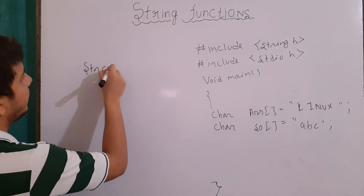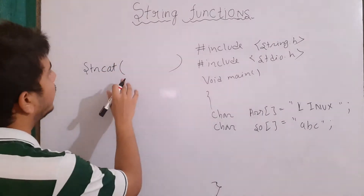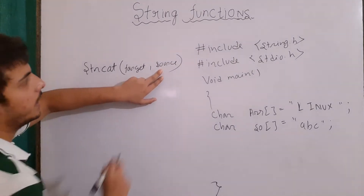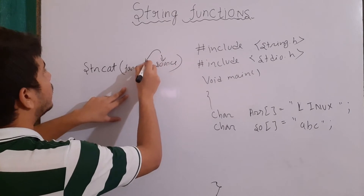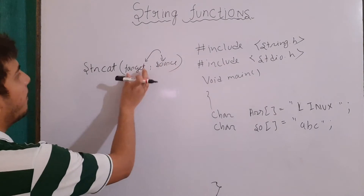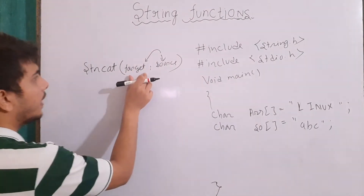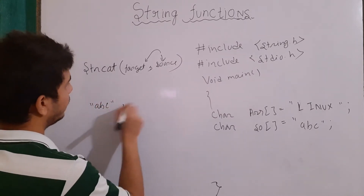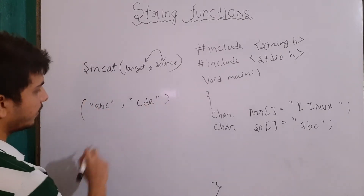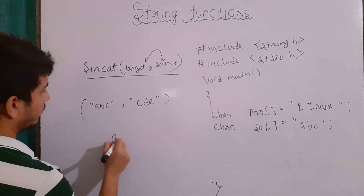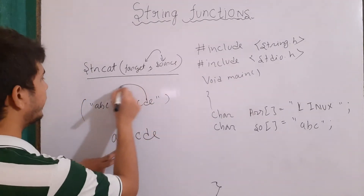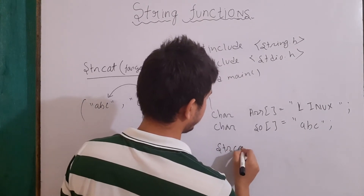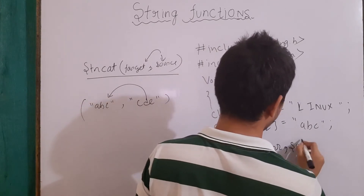Next we have strcat, which is string concatenation. It also takes two inputs — target and source. Whatever string is present in source will be appended to the target array — appended, not overwritten. For example, if the first array was "abc" and the source array was "cde", the final result will be "abccde". Here if we write strcat(arr, so), our target is arr and source is so.